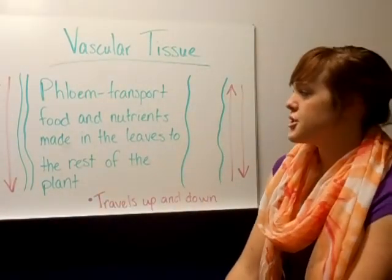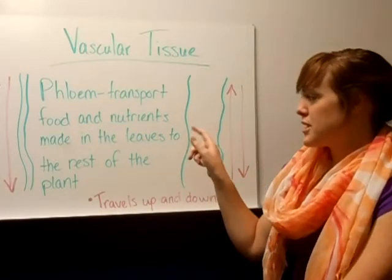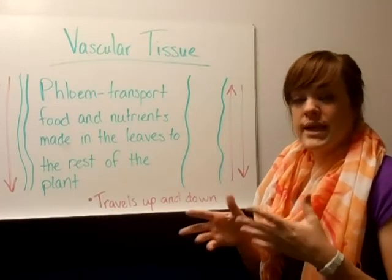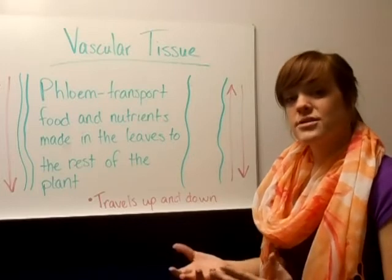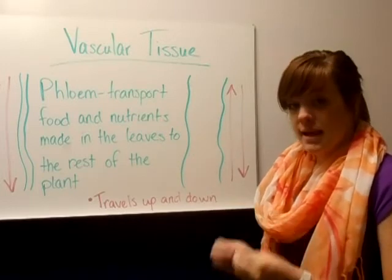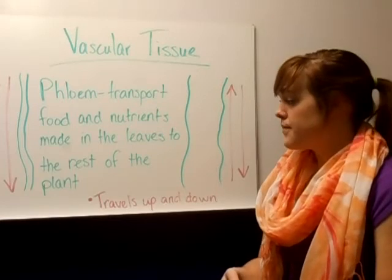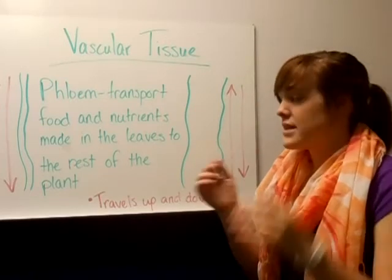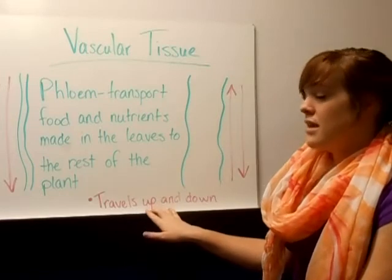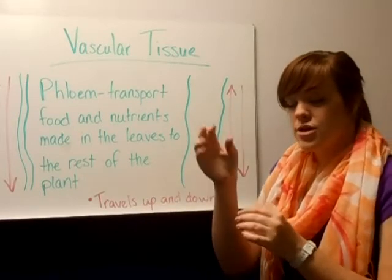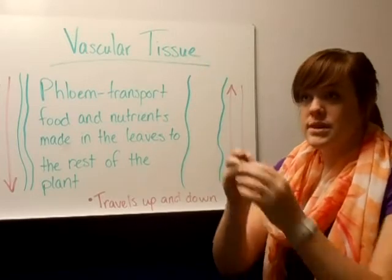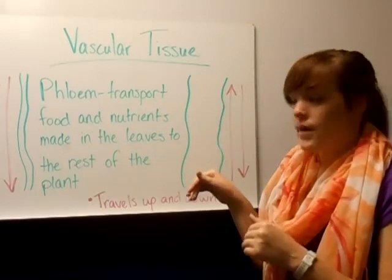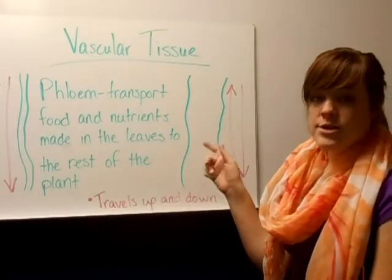The second type of vascular tissue is the phloem, and it transports food and nutrients made in the leaves to the rest of the plant. When a plant does photosynthesis, we know it gives off oxygen, but it also creates energy to be used in the plant in the form of sugars. Those sugars need to get to all the parts of the plant — even down to the roots so they can grow, and up to the highest branches so they can continue growing. In the phloem, the sugars can travel back and forth, either down to the roots or up to higher branches, so there is no one-way obligation. You need to write down what phloem do in your notes.